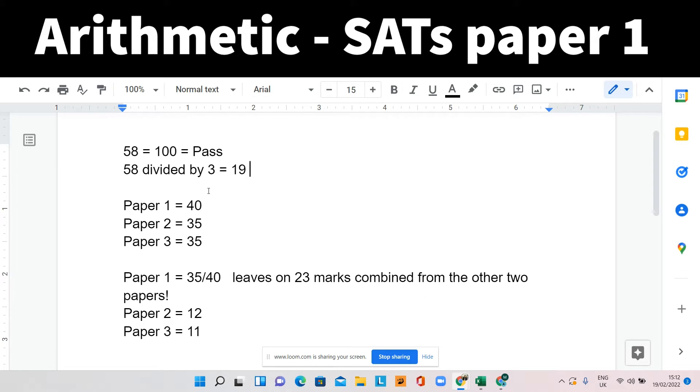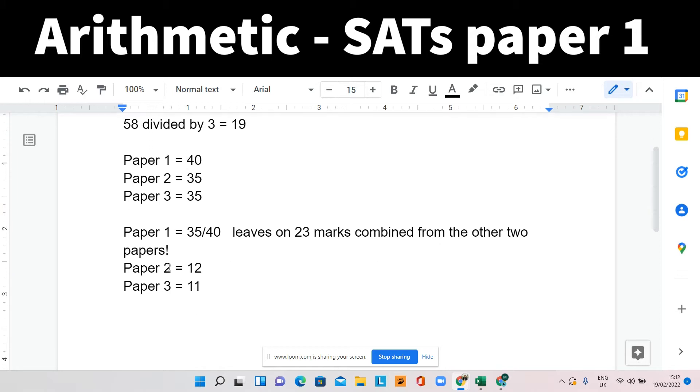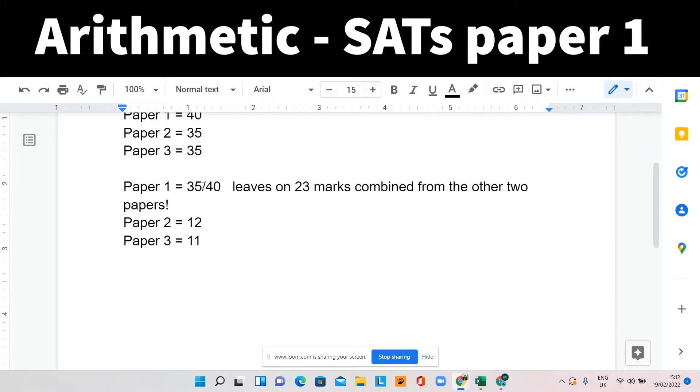Paper one, in my opinion, is easier. And we try to make sure the children score as many marks on that paper as possible. For example, let's say the children could score 35 out of 40 marks on the arithmetic paper going through and getting that many questions right or in the high 30s.